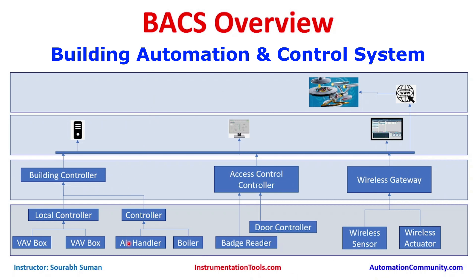The control network architecture of building automation looks like this. It has a field layer where field devices such as VAV boxes, air handlers, boilers, badge readers, and wireless sensors reside. Then there is the automation layer with automation controllers, followed by the supervisory layer with supervisory application settings, and finally the enterprise layer at the top.